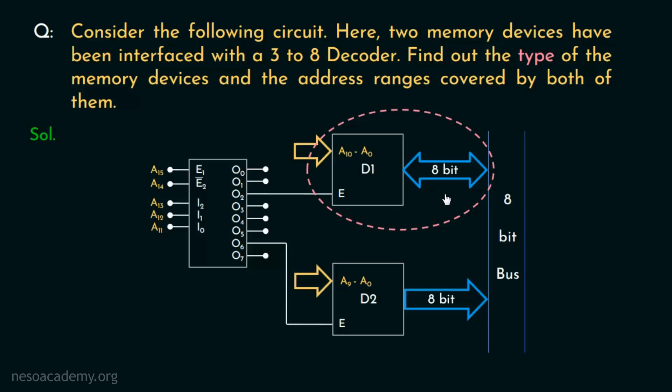If we notice, the bus which is connected to D1 is a bi-directional one and it has a size of 8 bit. A bi-directional bus means that we can both read from the device and write on it. That clearly means that D1 is nothing but a RAM or random access memory.